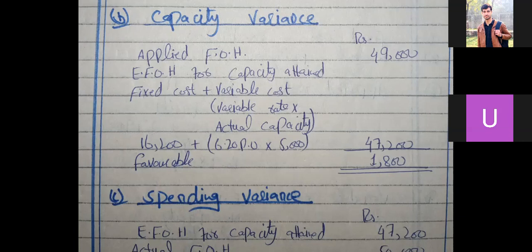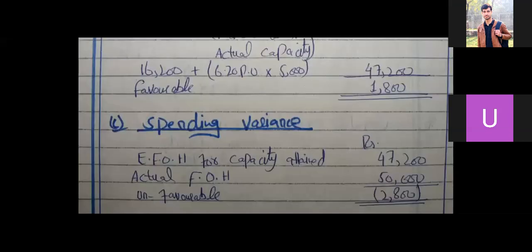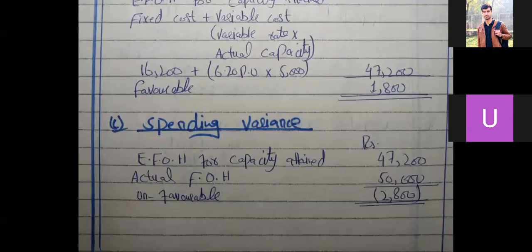Capacity variance: applied FOH was Rs. 49,000 and estimated FOH for capacity attained was Rs. 47,200, giving a balance of Rs. 1,800. For spending variance, keep estimated FOH for capacity attained versus actual FOH. The balance is Rs. 2,800 unfavorable. This is question number 10.21, the actual activity of one month.